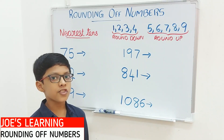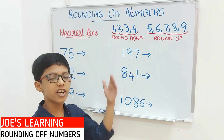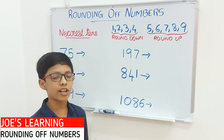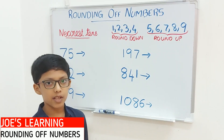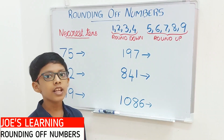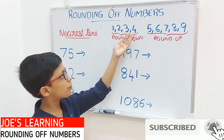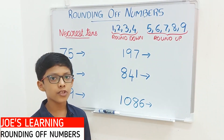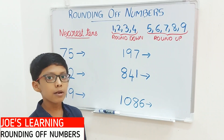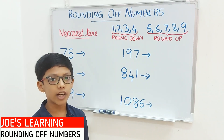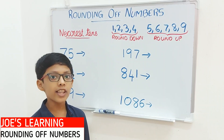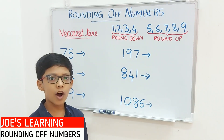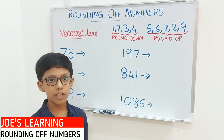First let us understand how to round off numbers to the nearest tens. For that we need to first look at the digit in the 1's place. If the digit in the 1's place is less than 5 — that is 1, 2, 3, or 4 — then we have to round downwards, to the tens that is before that number. But if the digit in the 1's place is greater than or equal to 5, then we have to round upwards, to the tens that is after that number.